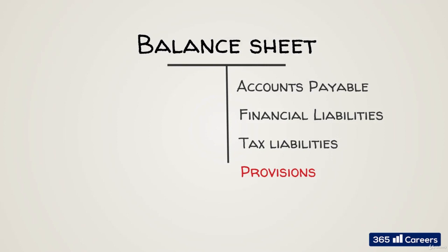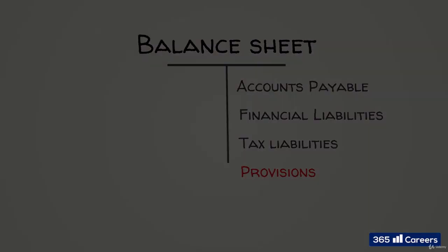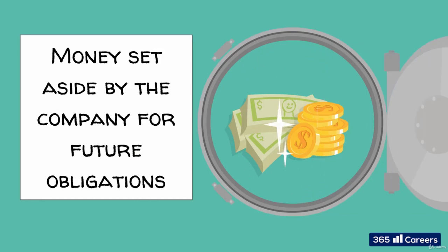Provisions are another liability we will often find on a firm's balance sheet. This is money a company has set aside for future obligations. A provision represents a payment we expect to make at a certain point in time. An example of a situation when we must set aside a provision is when another firm sues us, and we can reasonably expect we must pay a certain amount when the trial ends or when it is settled.